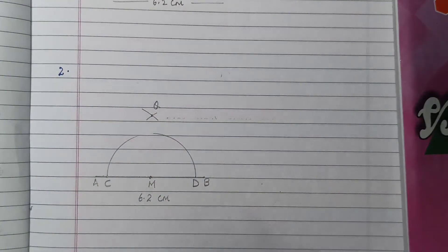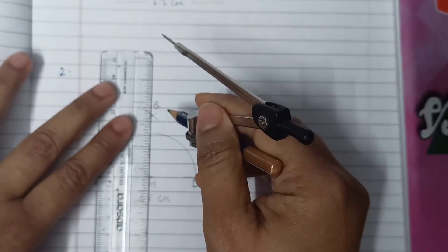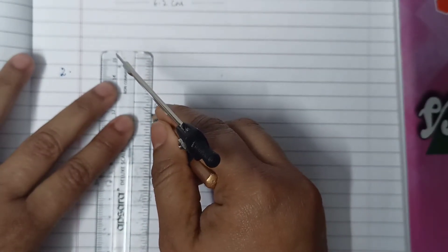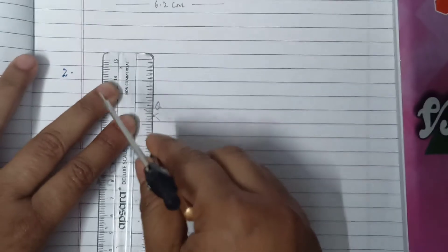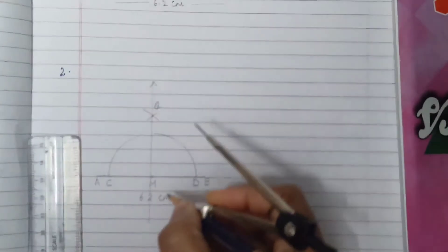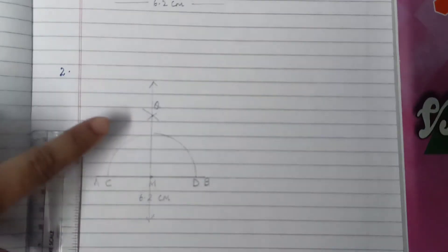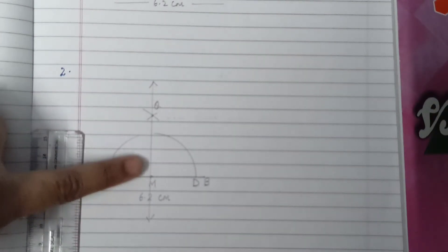Now we will draw a line passing through Q and M. QM is the required line perpendicular to the line segment AB at point M.